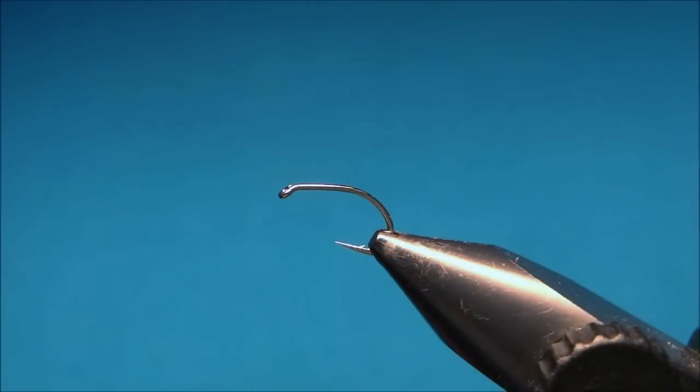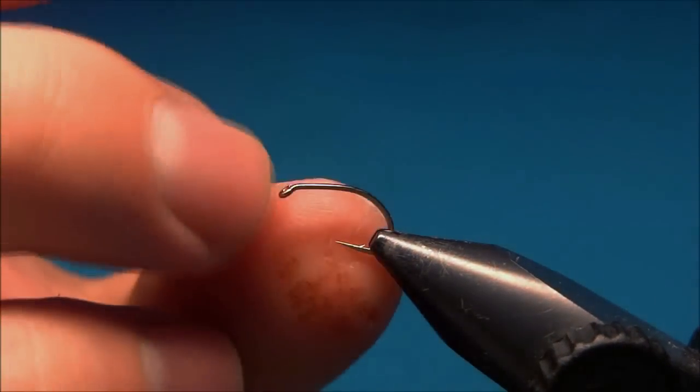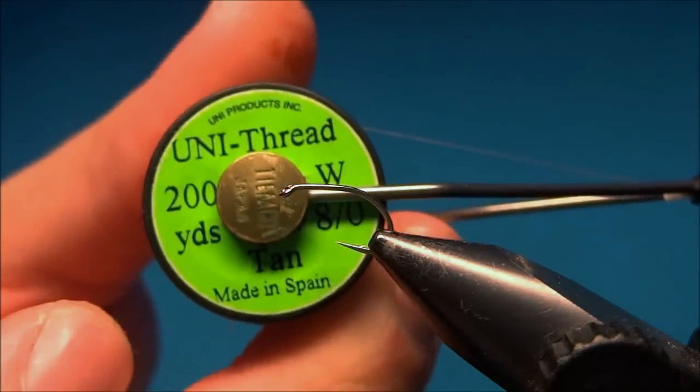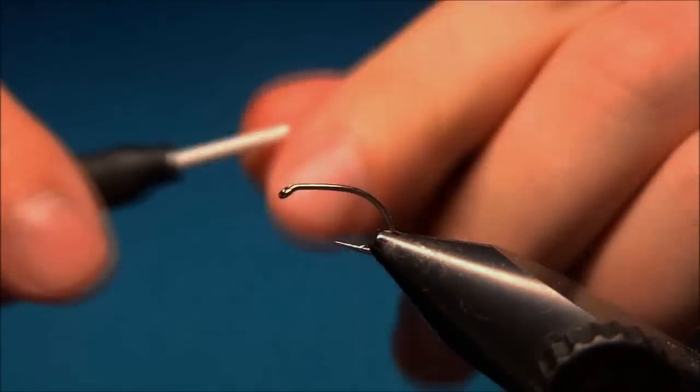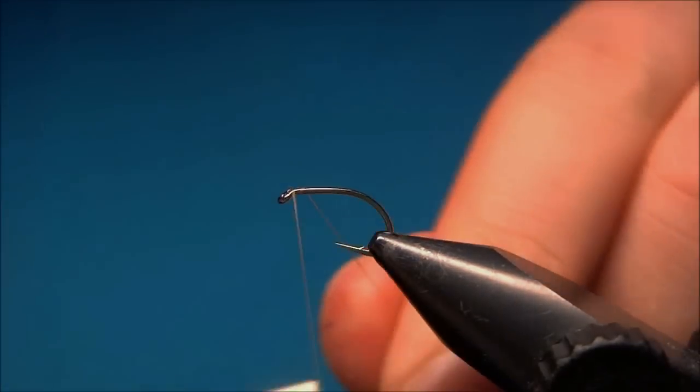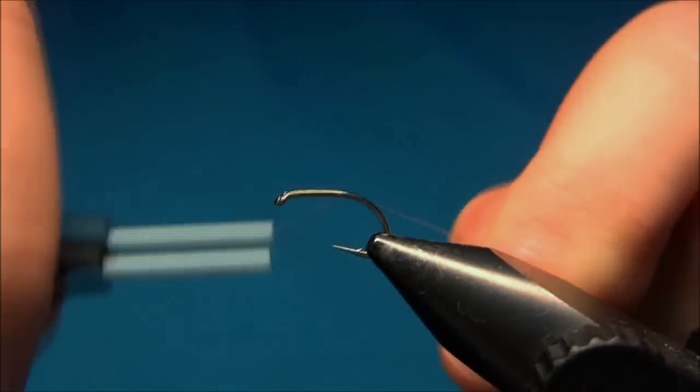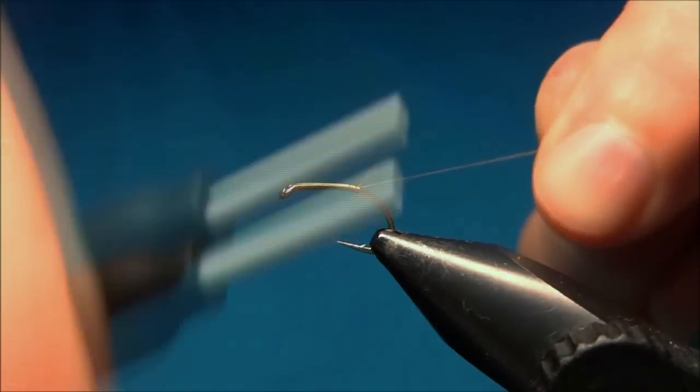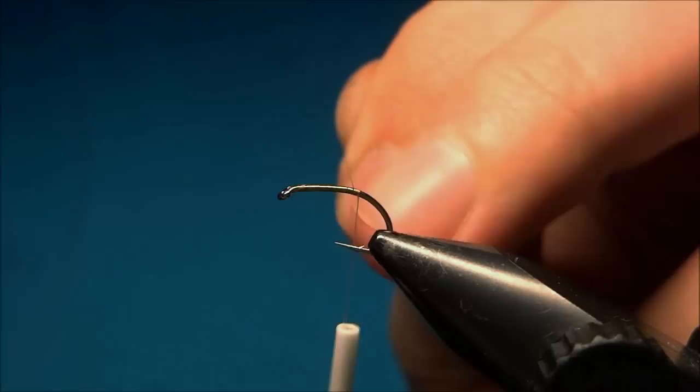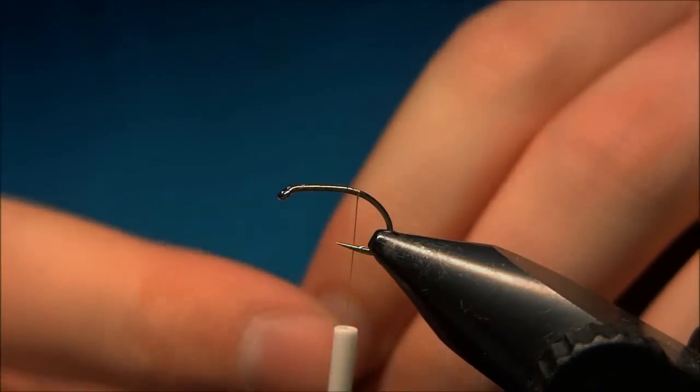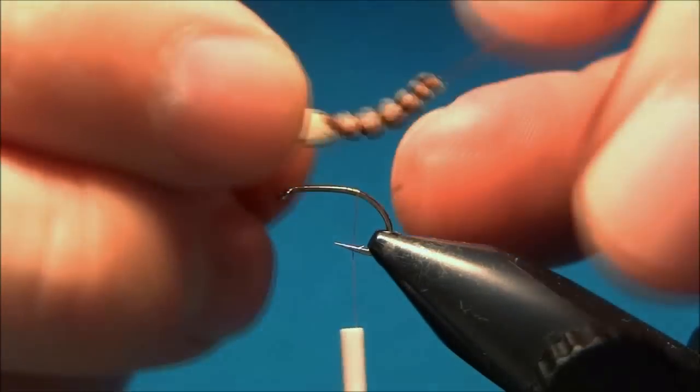And we'll move on to tie the rest of the fly and now we'll tie the fly itself. In the hook I have a grub hook size 14 and the thread is the same thread, unithread 8-0 in tan and we start by taking down the thread to the barb of the hook.